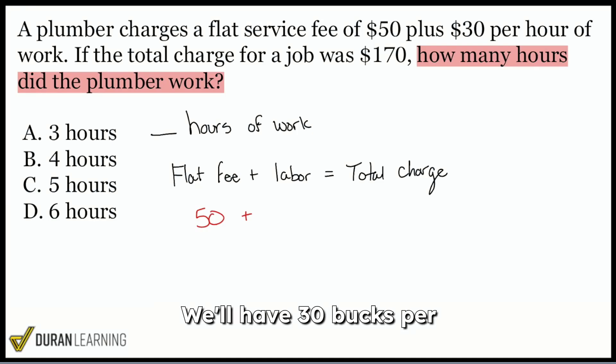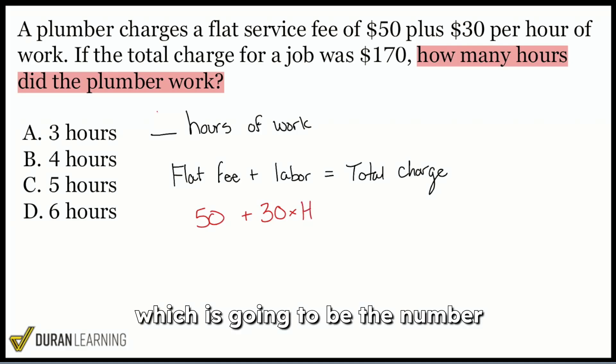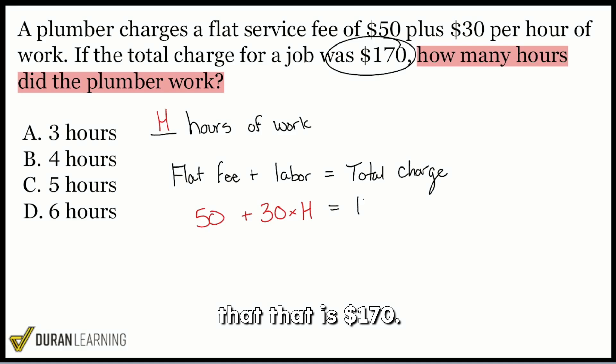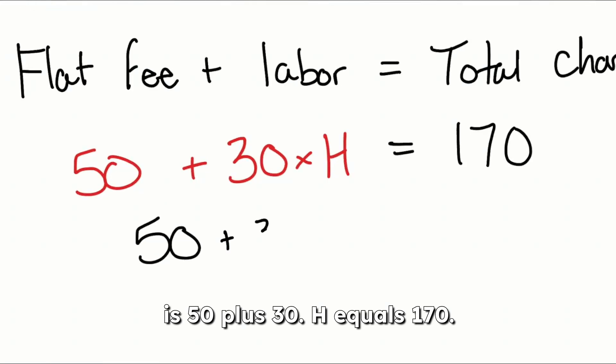But no matter what, you're going to be multiplying the rate by the number of hours in this case. So there we are. We'll have $30 per hour multiplied by H, which is going to be the number of hours that this plumber works. And the total charge, well, that is $170. So look at that. We have everything we need, and we're good to go. We can solve this.